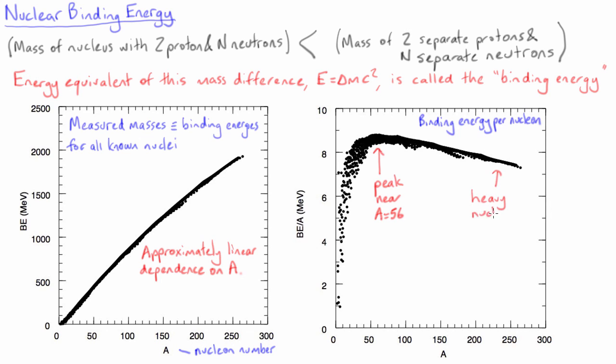As you move to heavier systems, the binding energy per nucleon decreases slowly, whereas the lighter systems have a much steeper slope. Looking at the average across all nuclei, the binding energy per nucleon is approximately constant at around 8 MeV per nucleon.